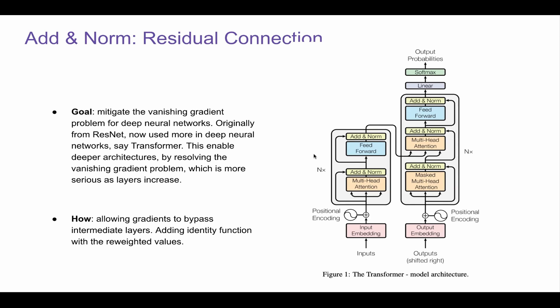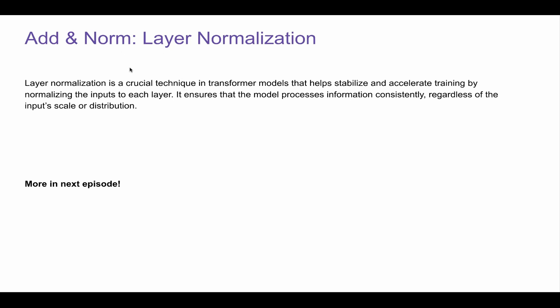And then let's talk about the norm. Usually in transformer or sequential, like LLMs, it refers to layer normalization. Layer normalization is a technique that helps stabilize and accelerate training by normalizing the inputs to each layer. It ensures the model processes information consistently, regardless of the input scale or distribution. I know it doesn't mean a lot, but we can use next episode to talk about layer normalization. And I want to also compare with other normalization.